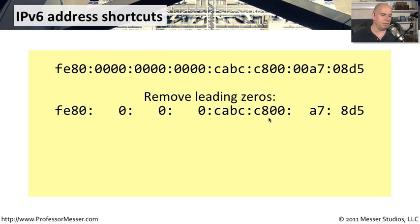FE80:0000:0:0:CABC:C800:00A7:08D5. We've gotten rid of the zeros in front of the A7. And we've gotten rid of the zero in front of the 8D5.